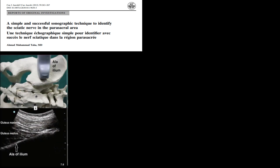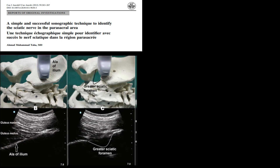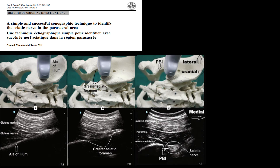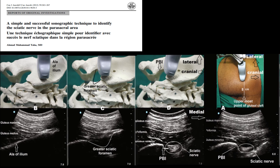Initially, when the probe is placed on the ilium, you can see the continuous hyperechoic bone of the ilium with the gluteus maximus and medius beneath it. As the probe is moved caudally, the discontinuity of the ilium appears as the greater sciatic notch. Moving even more inferiorly, the curved hyperechoic contour of the posterior border of the ischium is seen, with the sciatic nerve medial to it. The probe is placed approximately eight centimeters at the highest point of the natal cleft.